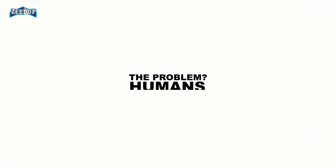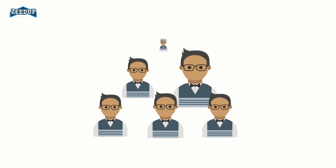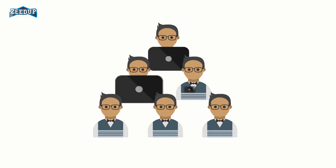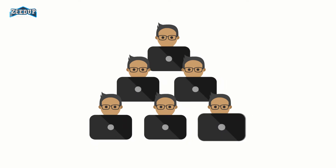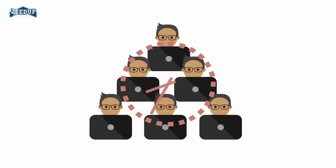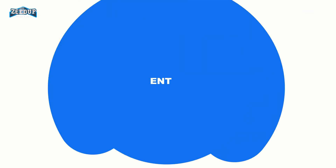The problem: humans. With any change in the business process, a company would need to hire new employees or train existing employees to map IT systems and business processes. Both solutions are time and money consuming. Also, with any succeeding business process change, it will also need hiring or retraining.